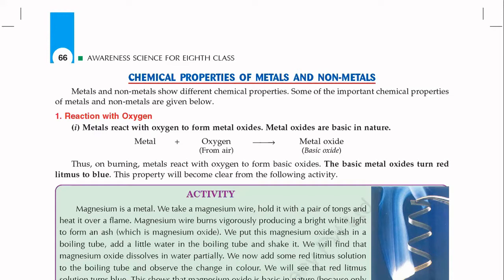If we dip the red litmus paper in lemon juice, there will be no impact on the red litmus paper. But when we dip the blue litmus paper in lemon juice, it will convert the blue color to red. This is the acidic nature key point. If a liquid converts the blue litmus paper to red, then it is acidic.